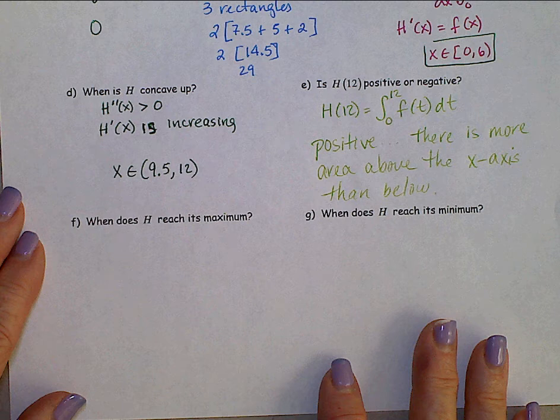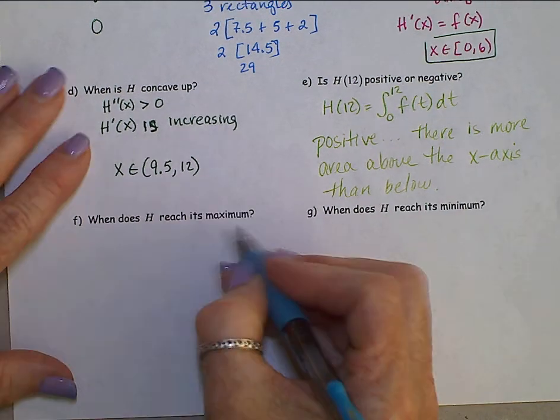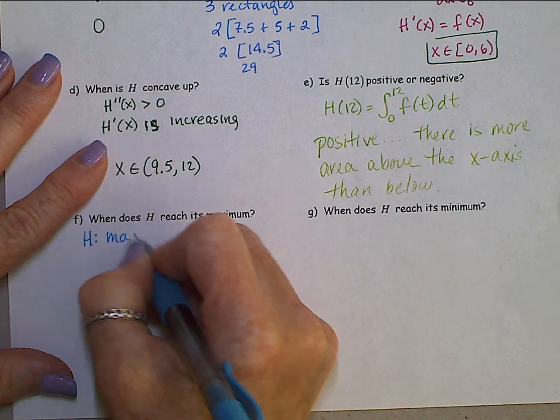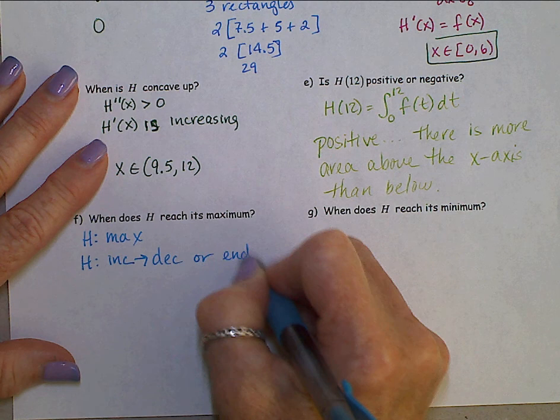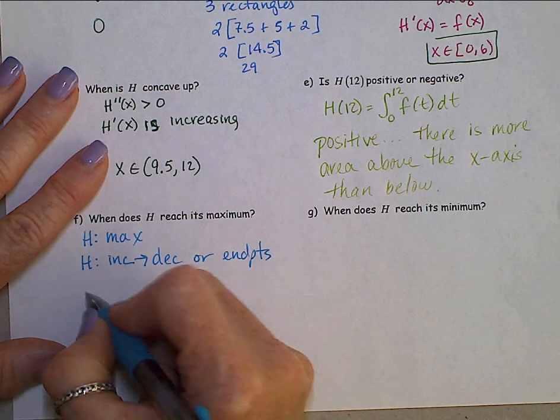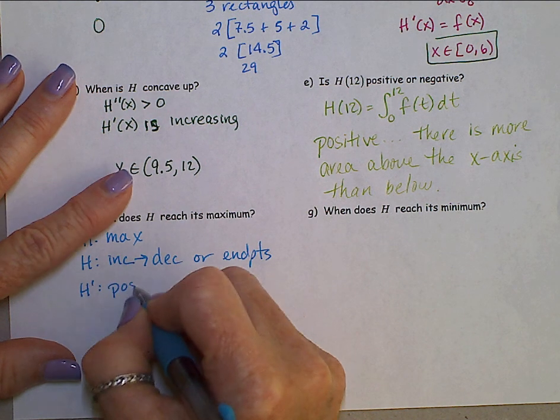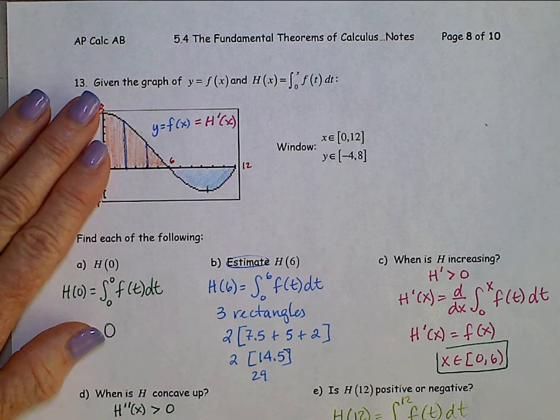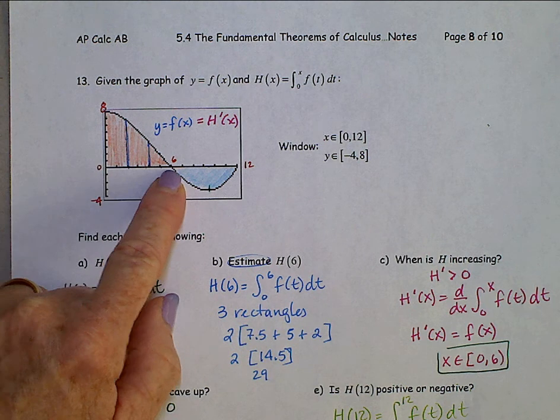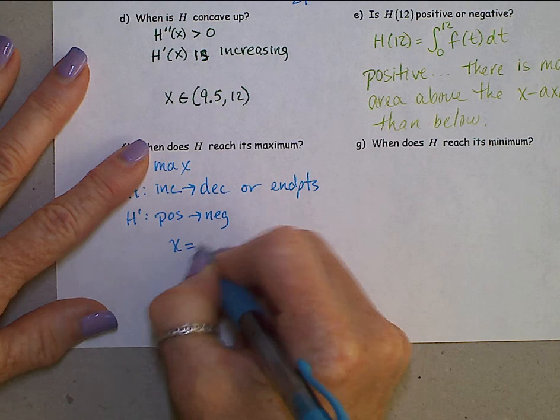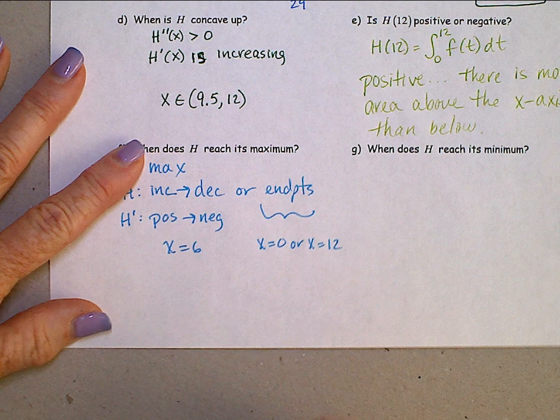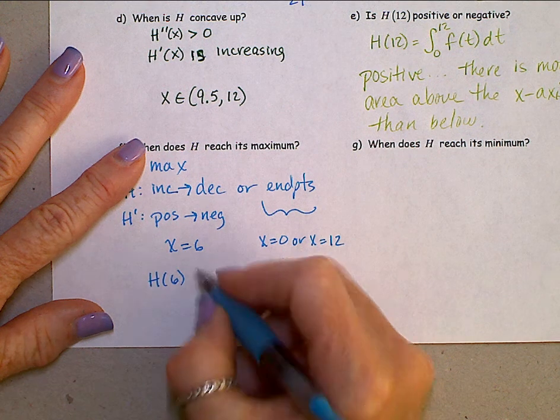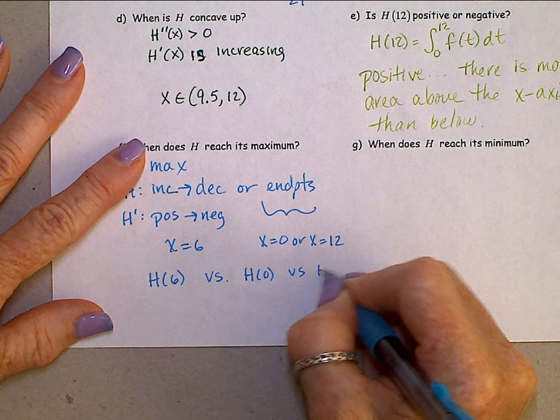When does h reach its maximum? We know that h has a maximum when h is changing from increasing to decreasing or at end points. For h to change from increasing to decreasing, that means that h prime changes from positive to negative. And looking back at our graph, this is the graph of h prime. This graph changes from positive to negative at 6. The end points are at 0 and 12. So we need to compare h of 6 versus h of 0 versus h of 12.